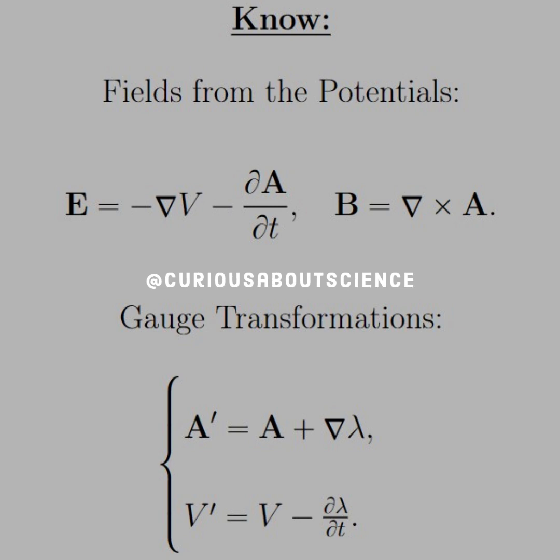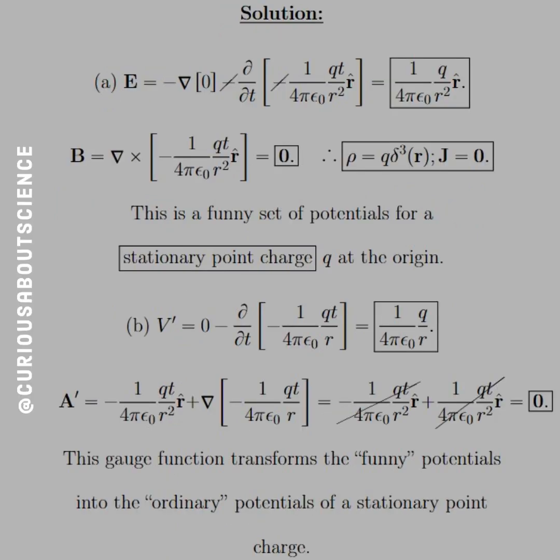Let's go ahead and chug this through. So, part A, our fields: well, if we take the gradient of the scalar, we get zero. And if we take the time derivative, we see we get the negatives canceling and the T goes bye-bye in the derivative. So we're left with exactly what we expected for kind of a point charge: 1 over 4 pi epsilon naught Q over r squared in the r-hat direction.